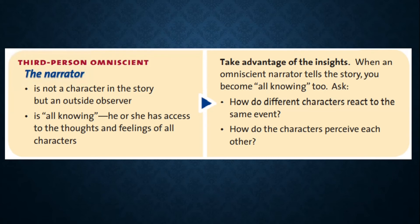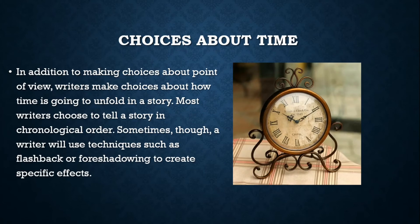Choices about time. In addition to making choices about point of view, writers make choices about how time is going to unfold in a story. Most writers choose to tell a story in chronological order. Sometimes, though, a writer will use techniques such as flashback or foreshadowing to create a specific effect.